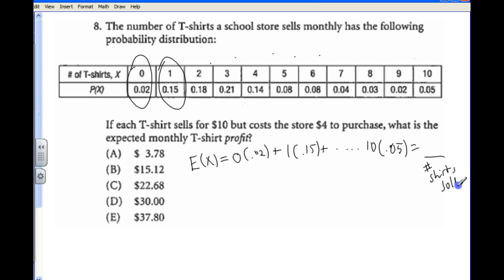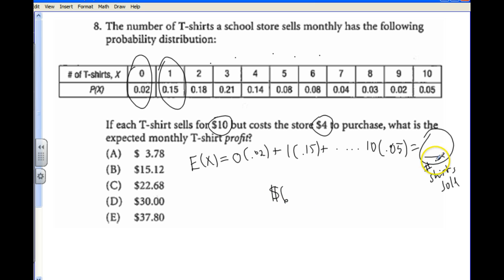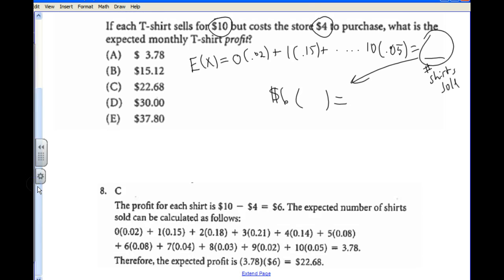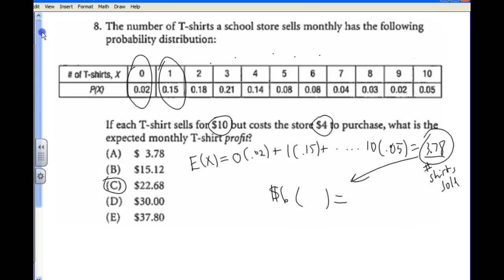We really want to figure out how much profit we're going to make, but we need the number of shirts sold to get there. Each shirt sells for $10, but costs $4 to make, so that's $6 profit per shirt. If you add up the expected value calculation, you get 3.78 shirts. Multiply that by $6 profit and you get a total expected profit of $22.68, so the correct answer is C.